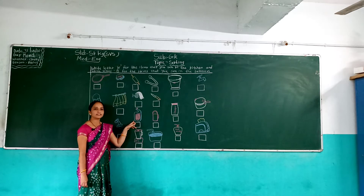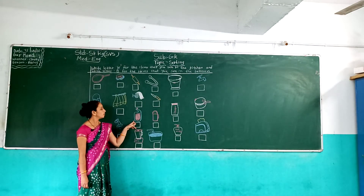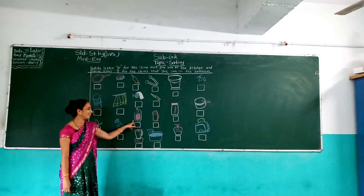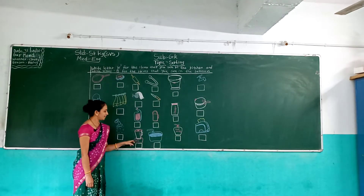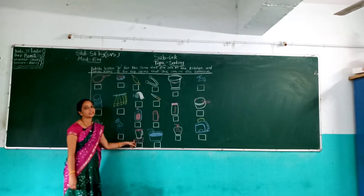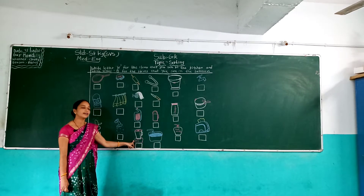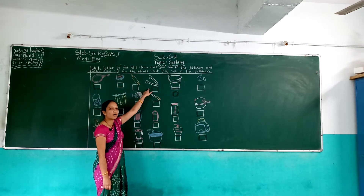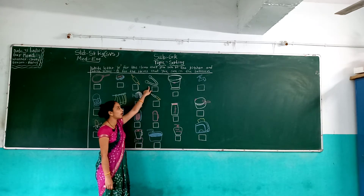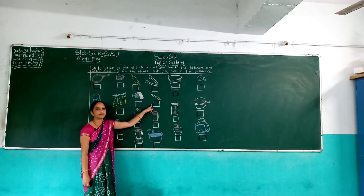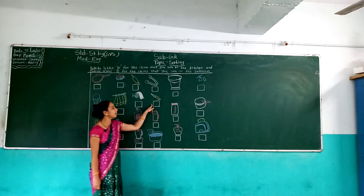Which picture is this? Toilet cleaner. Which picture is this? Toilet cleaner. And next, which picture is this? Mixture — mixture हम कहाँ use करते हैं? Kitchen में. And next, tongs. Which picture is this? Tongs — tongs हम kitchen में use करते हैं.